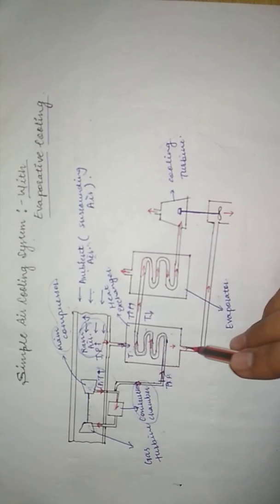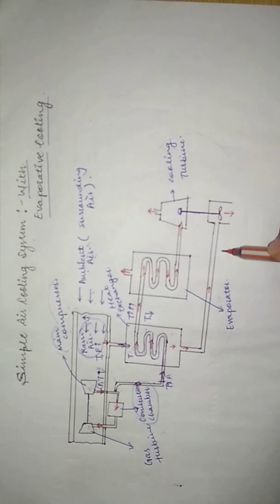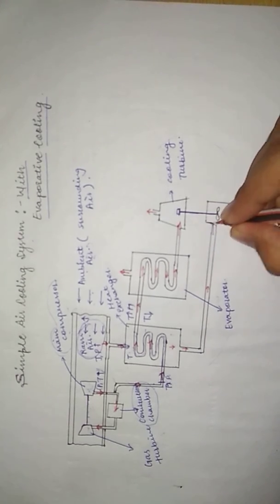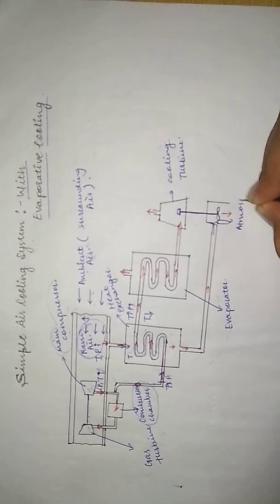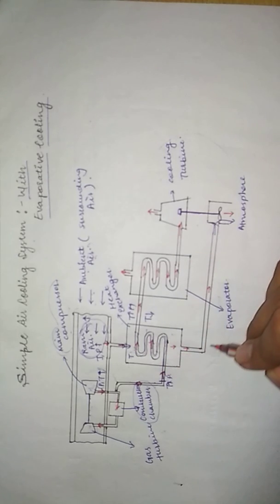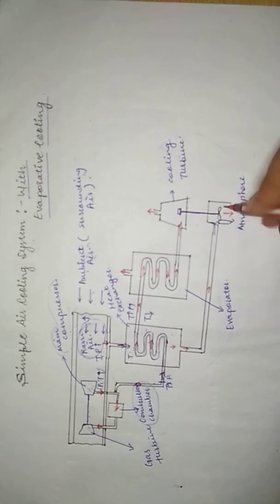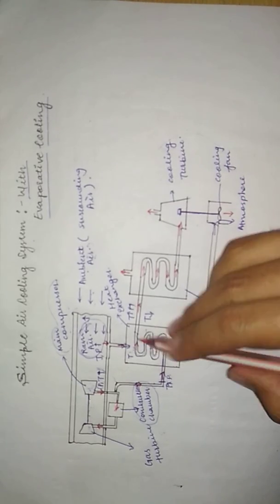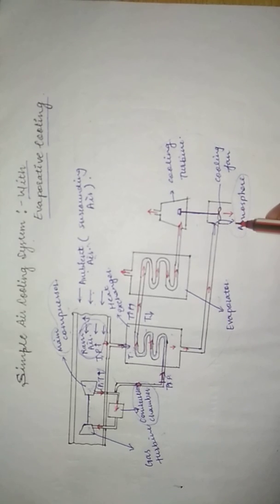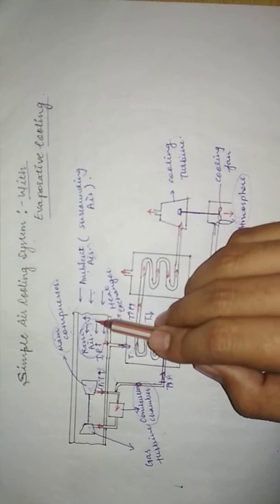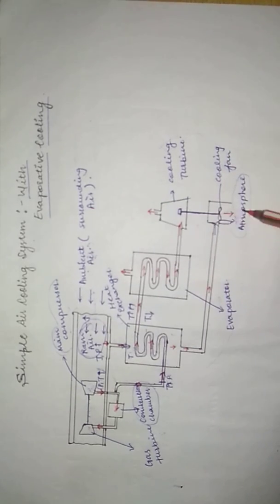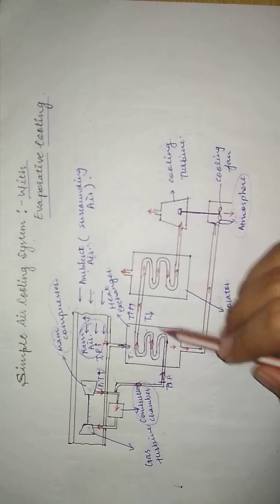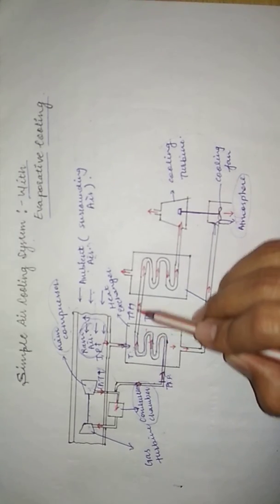At the inlet of the heat exchanger, the air is at high temperature and high pressure, but when it comes out, the temperature drops. So the air cools in the heat exchanger. The ram air from this side is passed through the cooling fan and sent back to the atmosphere — so we take in surrounding air from one side and send it back to the surroundings.